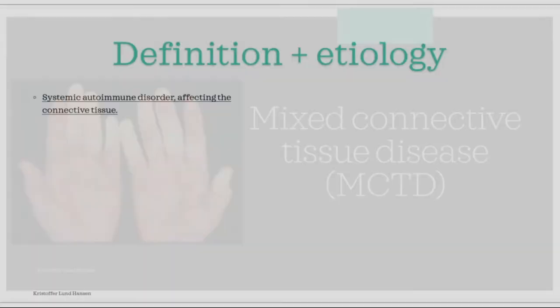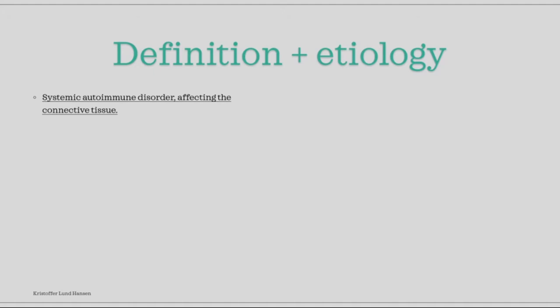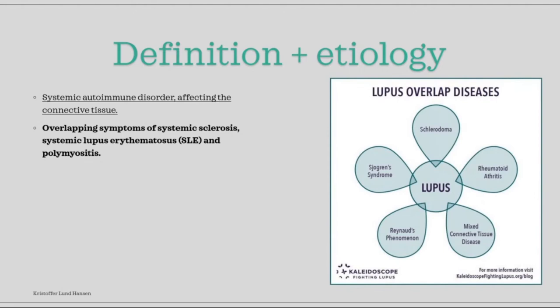MCTD is a systemic autoimmune disorder that primarily affects the connective tissue. It is defined by the overlapping symptoms from three different diseases: systemic sclerosis, also called scleroderma, lupus, and polymyositis. Over the course of time, MCTD can develop into lupus or systemic sclerosis, or even both.